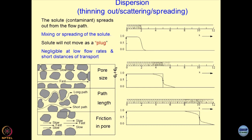As this concentration front moves, there is a spread out of the concentration and Ct/C0 becomes substantial. When you try to study the dispersion phenomena, we use models which tell you how dispersion is taking place. This is a micromechanism associated with the dispersion mechanism.